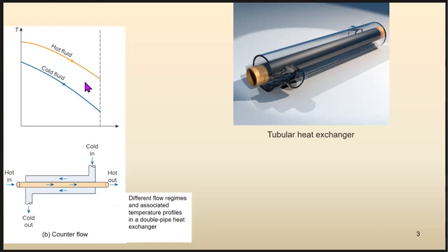In counter flow, in average over the entire heat exchanger, we get a better temperature difference. A better average temperature difference means more driving force for thermal energy exchange — which means more heat transfer from the hot fluid to the cold fluid. That is exactly what we want: the whole purpose of a heat exchanger is to have a higher rate of heat transfer over a certain length or area. We will discuss this more in the following slides.